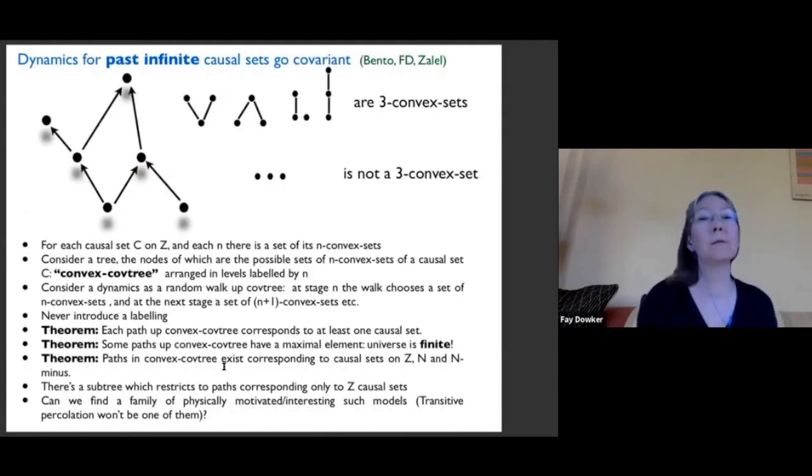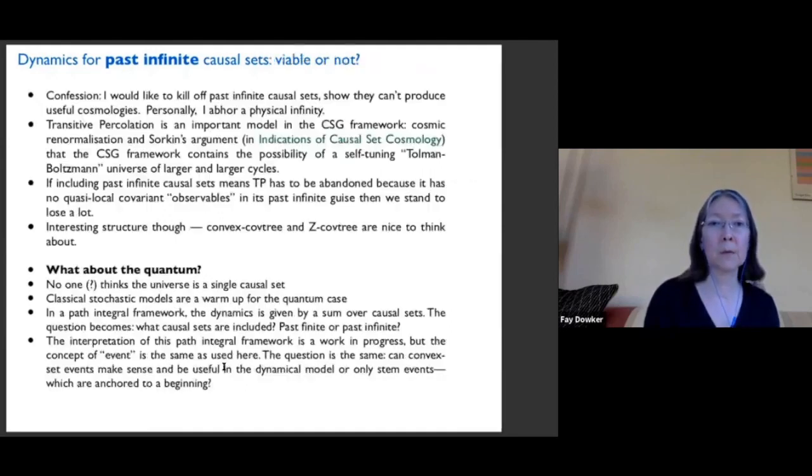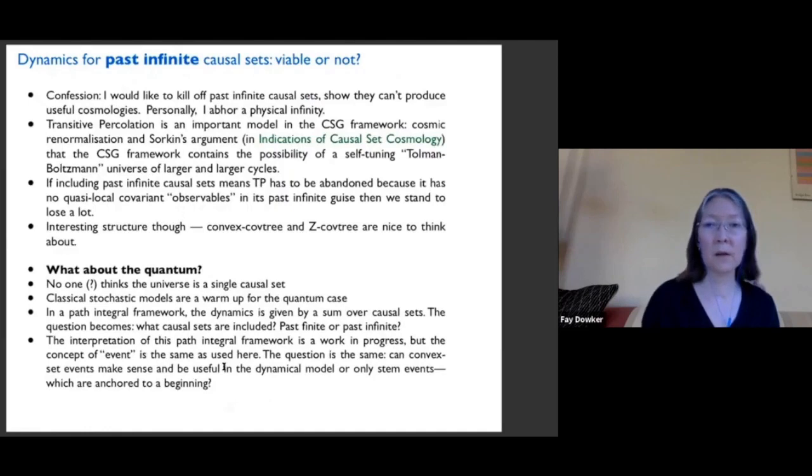And similarly to what we did with past finite causal sets, you can go covariant with all of this. You can construct a framework in which you never need to refer to the labels at all. You can grow causal sets in a way that doesn't refer to any particular labeling. And again, in view of time, I'm going to skip over that part and just end with these thoughts.